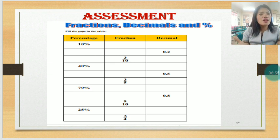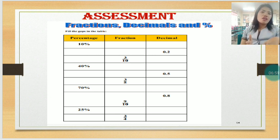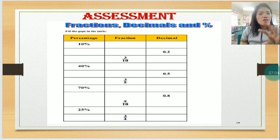We have fractions, decimals, and percent. We have here a table with three columns. The first column is percentage, the second is fraction, the third is decimal.